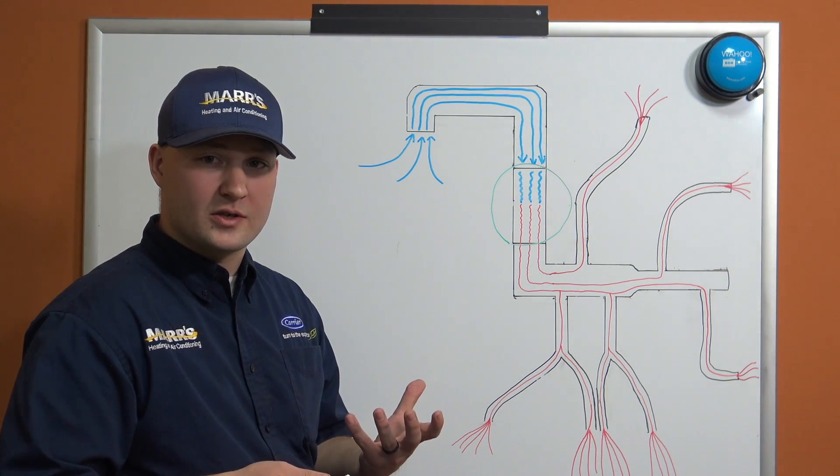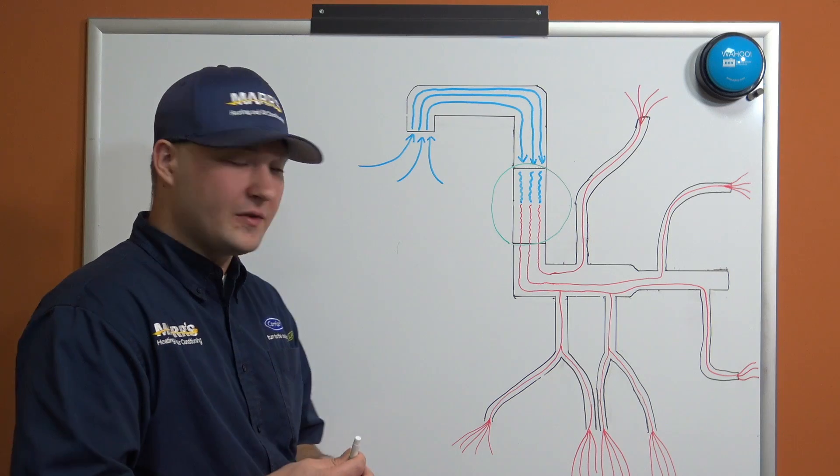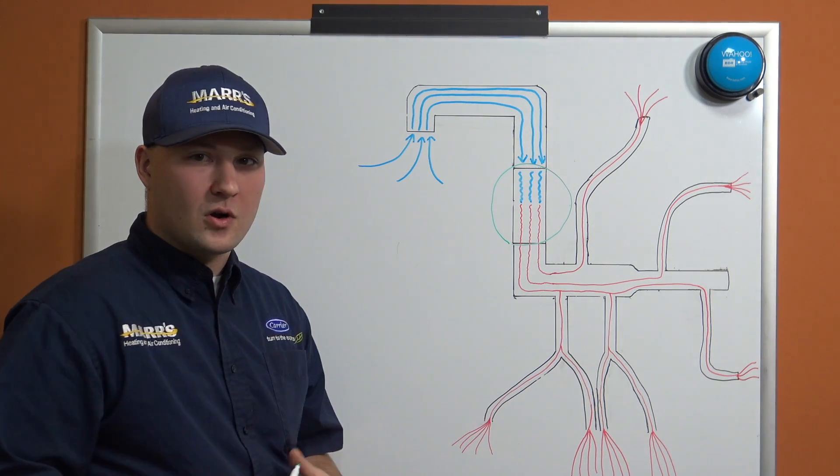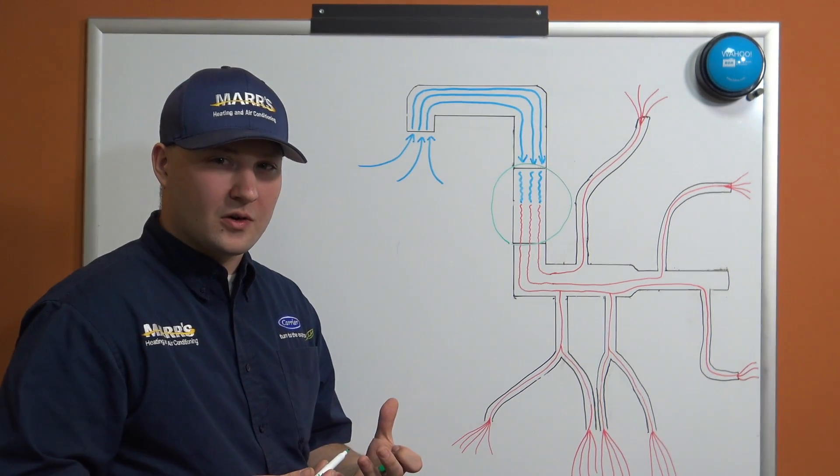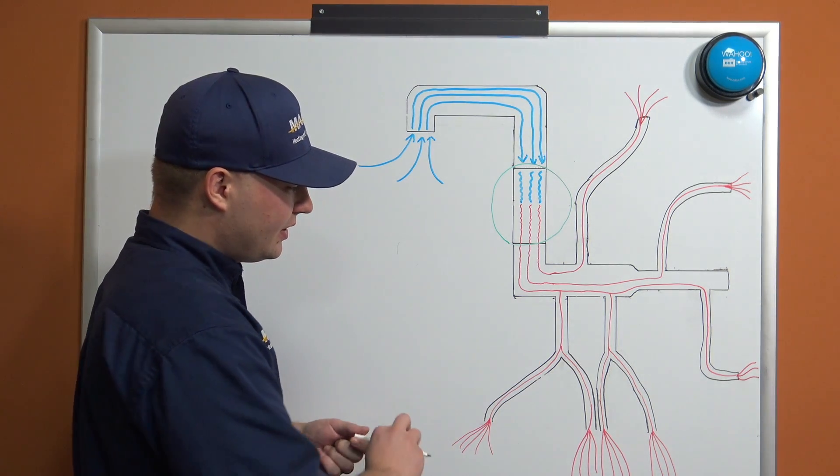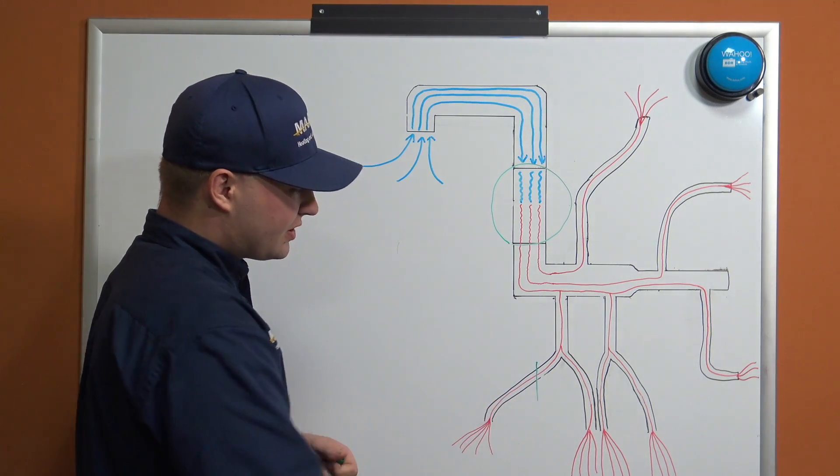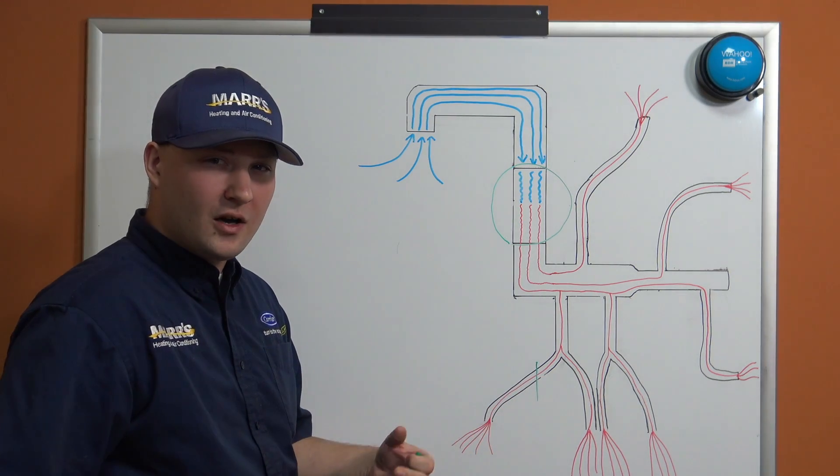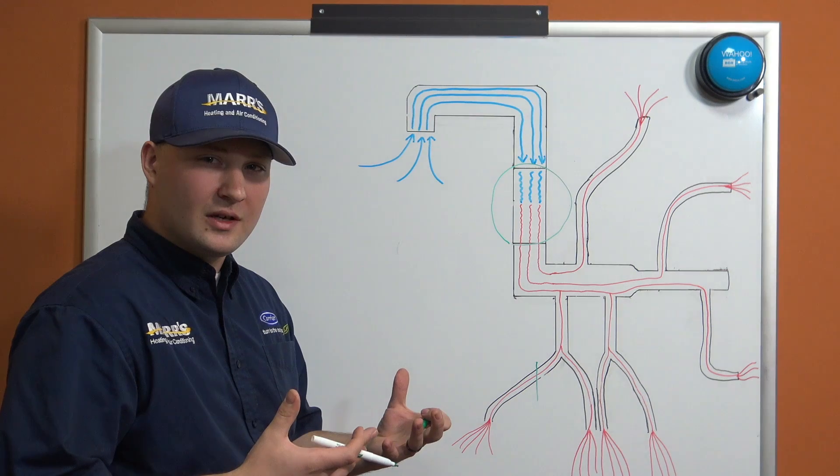If you clog an artery, your blood pressure goes up. So if we were to, let's say, just put a restriction here in this supply line, all of a sudden our static pressure is going to go up on the system.